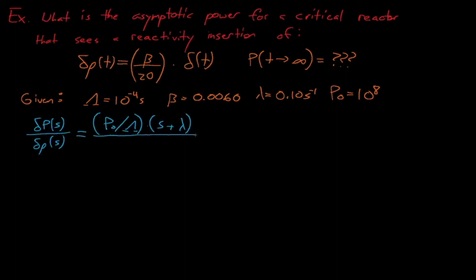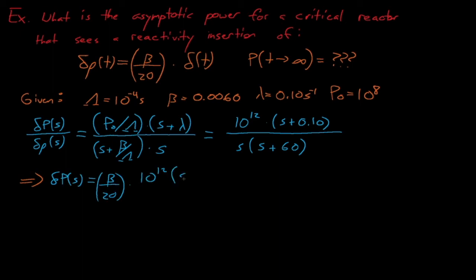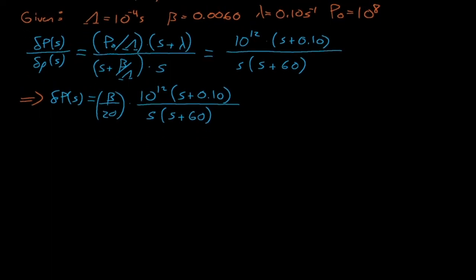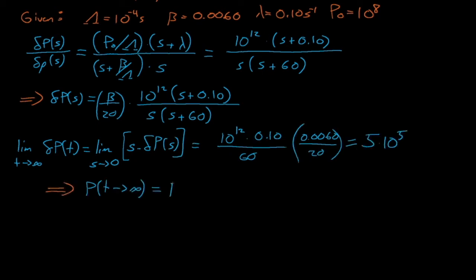Starting with the reactor transfer function, we can substitute in the five cent delta function for reactivity to get this expression for delta p of s. We can solve for the asymptotic value of this power using the final value theorem, and we see that the asymptotic power is equal to 1.005 times 10 to the eighth watts.